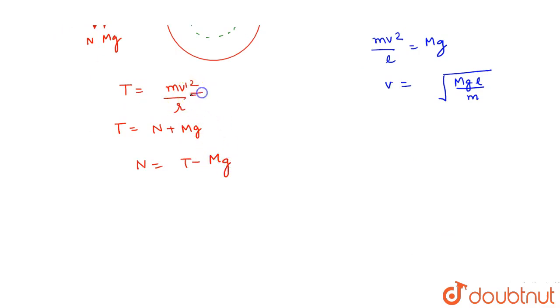Now, if we put T value here, if we put N equals to M v dash square divided by R and then the length will be minus capital MG. Now, if we put V dash value, which will be 2 times of V, V dash equals to 2 times of V.